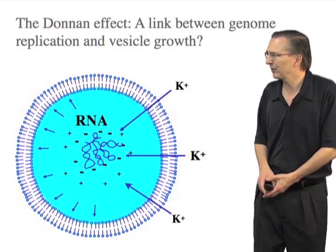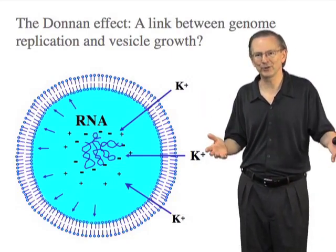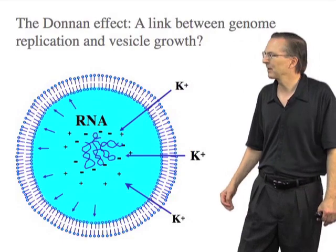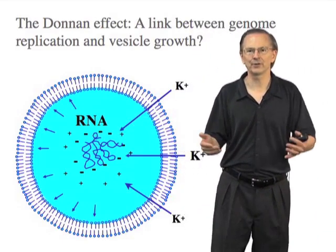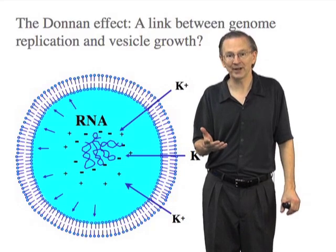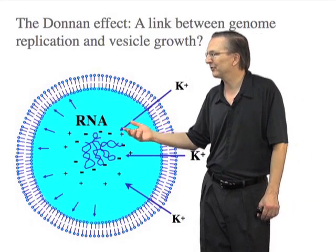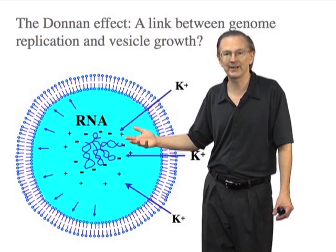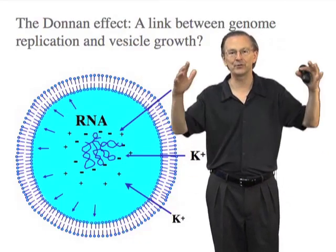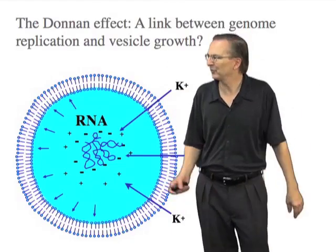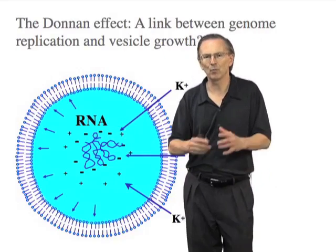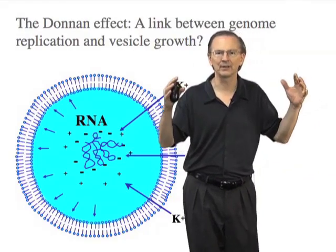The basic idea starts with our basic protocell model: genetic molecules trapped inside a semipermeable membrane. Large polymers contribute very little to the overall internal osmotic pressure. Most of the osmotic pressure results from counter-ions that neutralize the charge on the polyanionic genetic molecule — this is the classical Donnan effect. These ions contribute to an internal osmotic pressure, and we thought this physical effect meant that vesicles with more RNA inside should have a higher osmotic pressure.